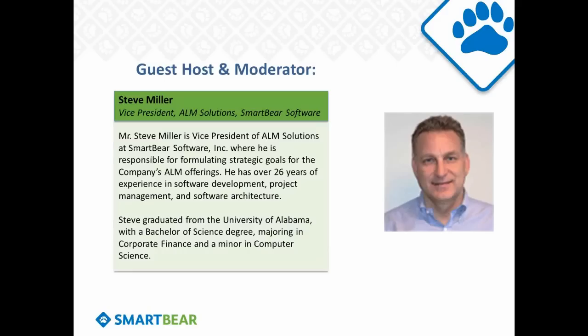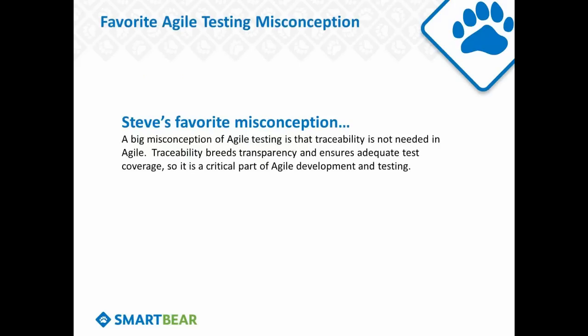My name is Steve Miller, VP of ALM Solutions at SmartBear Software. I have over 26 years of experience in software development, architecture, and testing. One favorite misconception about Agile testing: because Agile is so lightweight, people think there's no need to trace tests back to user stories and requirements. That's a big misconception — you always want to verify you have enough test coverage for all requirements and user stories. Traceability breeds transparency, and Agile is all about transparency.